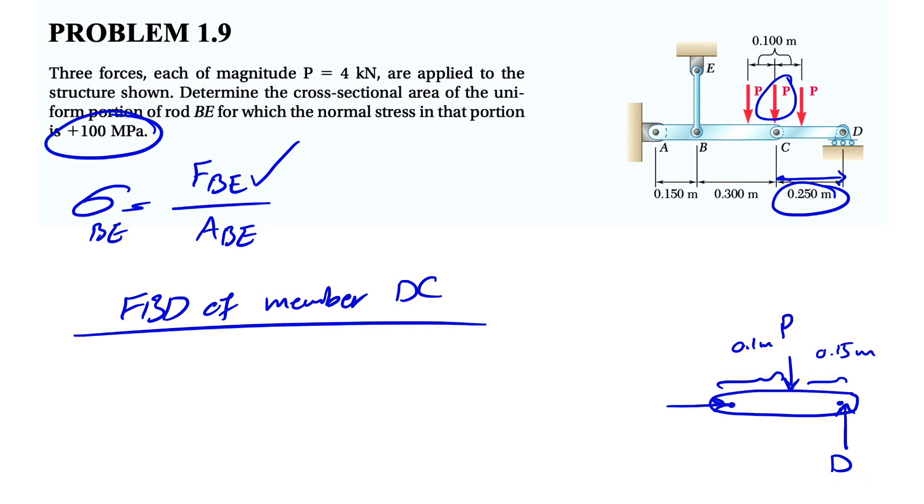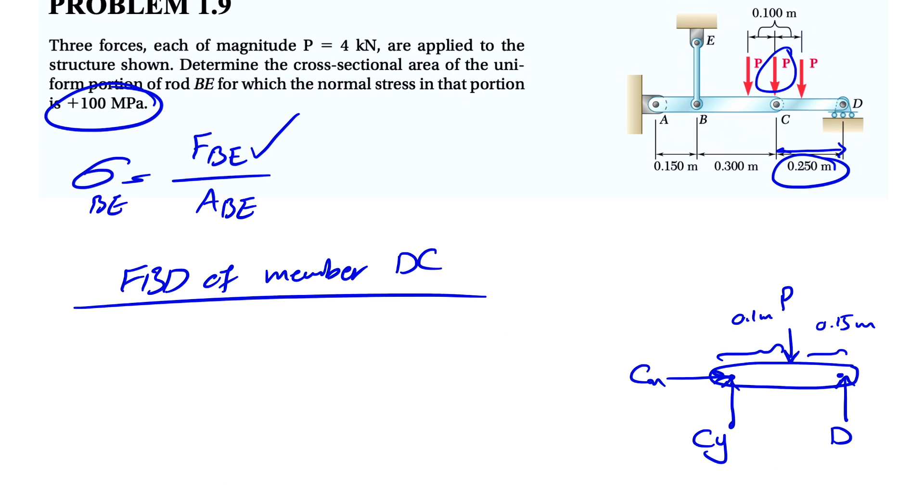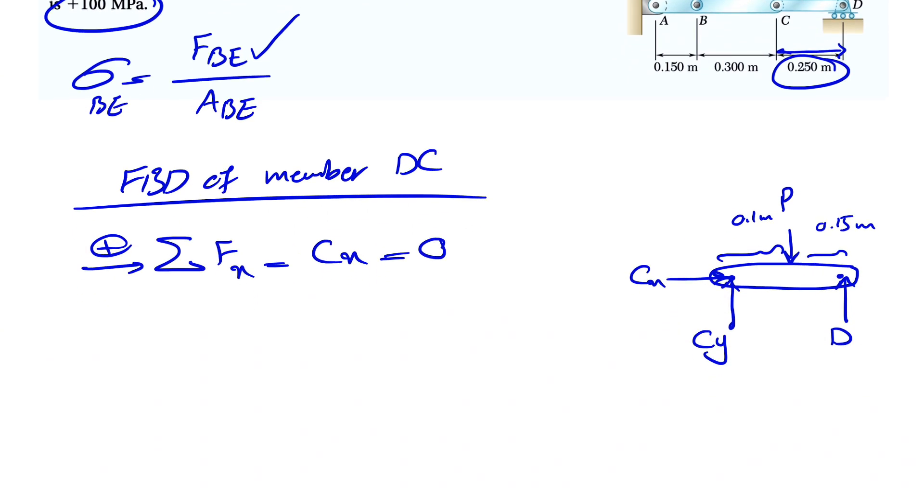We have a pin at point C, which we consider both Cx and Cy since we have a pin. We are in equilibrium. We're going to start with our equilibrium equation: sum of all forces in x is equal to zero. The reason I'm doing this is that we only have Cx in the x direction, meaning our Cx is zero. If we do a moment about point D, our unknown at point D will be cancelled out and we can find Cy.